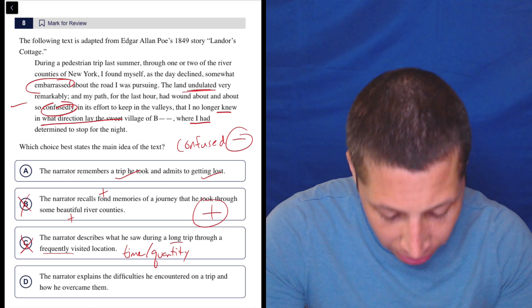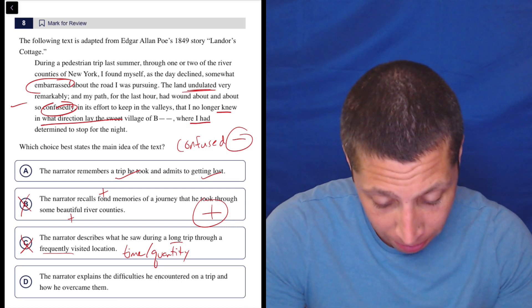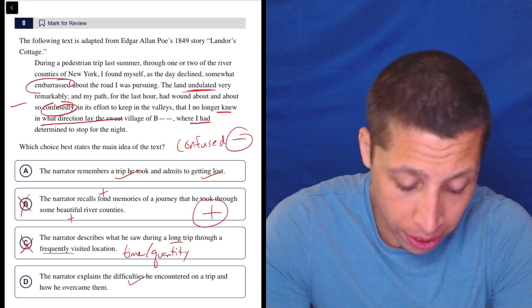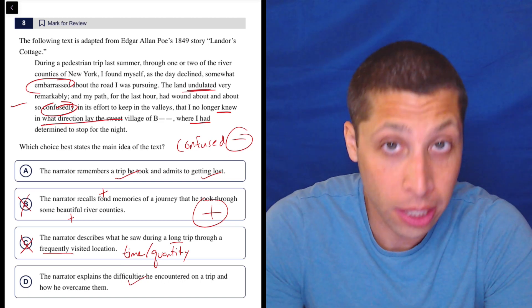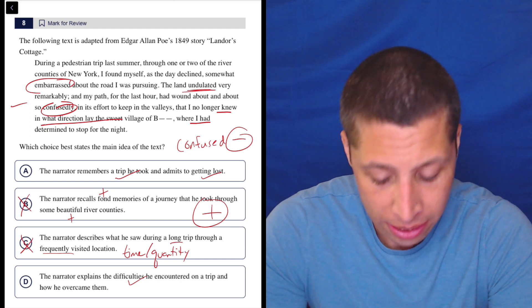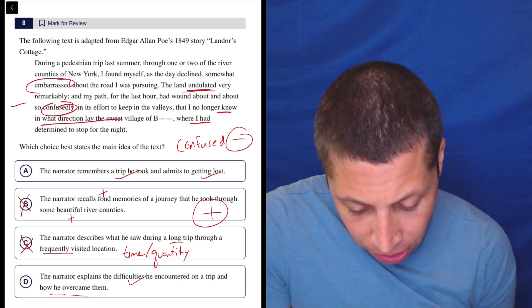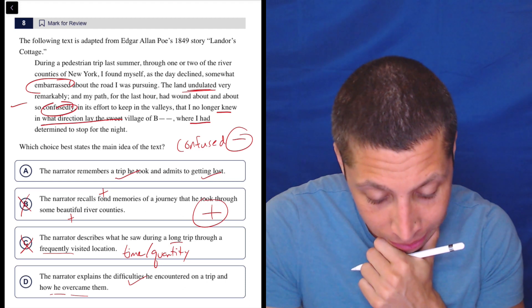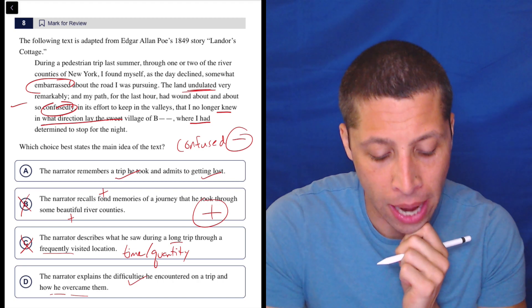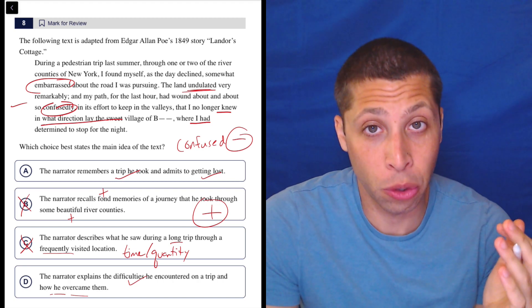D: The narrator explains the difficulties he encountered on a trip and how he overcame them. Well, we could stretch the word difficulties and be like, okay, he's lost, the land is undulating, the paths are hard to find. So maybe those are difficulties. Did he overcome them though? Did he get there? Well, it says he no longer knew in what direction the village was, but it doesn't say he somehow got there. We don't know, we'd have to read the rest of the story.